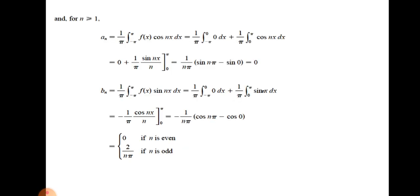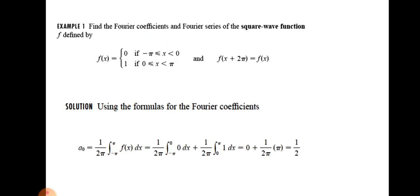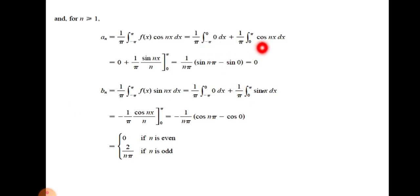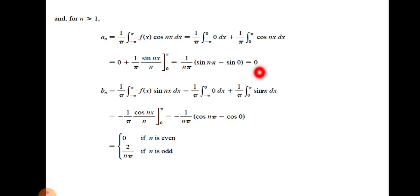To find aₙ, we apply the formula and split the integral into two parts: from negative π to 0, where f(x) equals 0, and from 0 to π, where f(x) equals 1. Performing the integration, we note that sin(0) equals 0 and sin(nπ) equals 0 for any integer n, whether even or odd. Therefore the final answer for aₙ is zero.